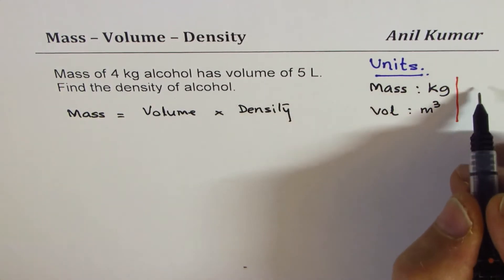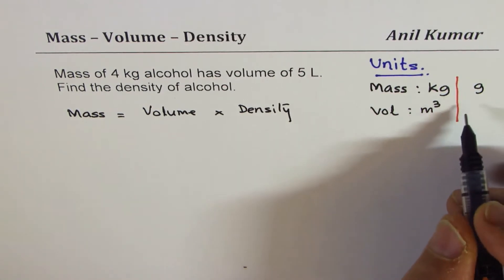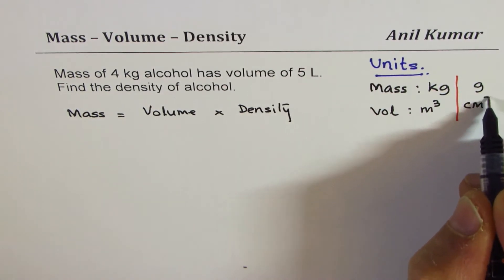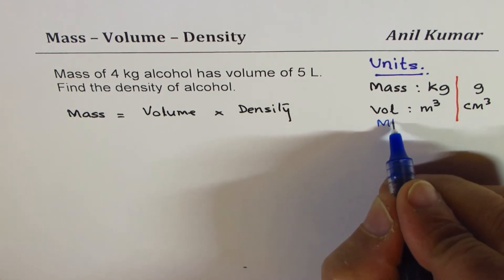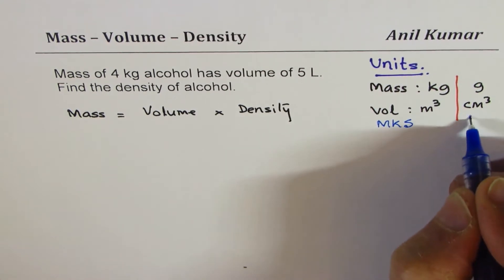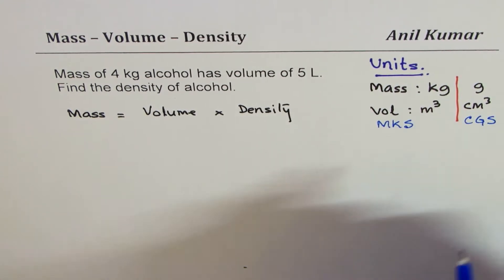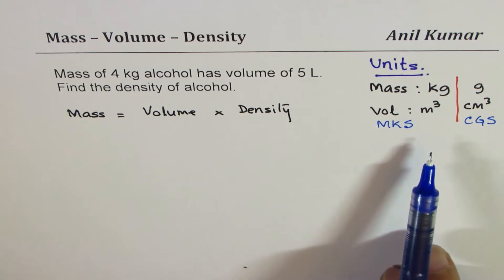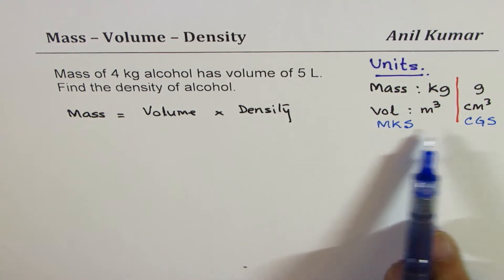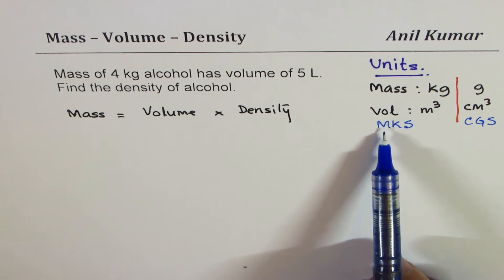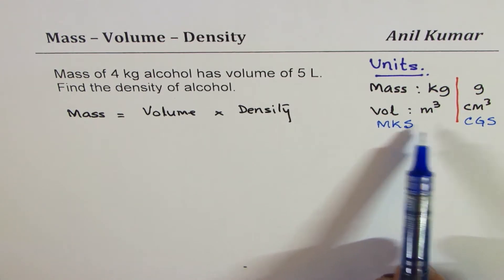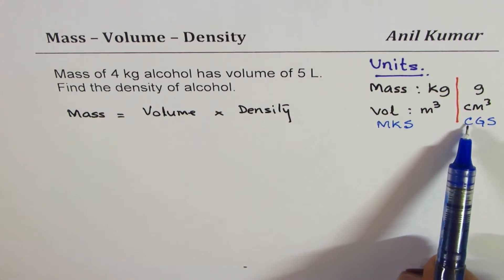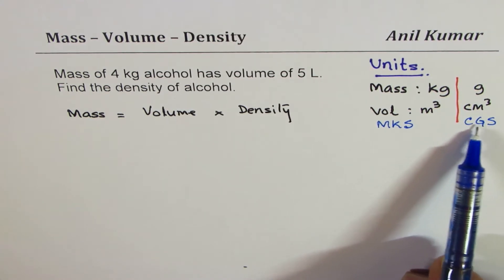volume in centimeter cube. So we call this as MKS system and that one as CGS system. We call this as MKS and this is CGS. Well students in junior classes, for them that may be difficult to understand how M is meters for length, kilograms and seconds, and this is centimeters, grams.